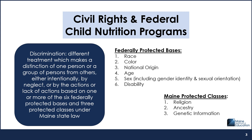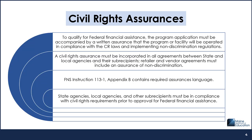The three protected classes in Maine include religion, ancestry, and genetic information. To be eligible to operate the CACFP, you must agree to operate the program in compliance with civil rights laws and to implement non-discrimination regulations. This assurance is required to eliminate discrimination against applicants, participants, and beneficiaries, and helps to prevent future discrimination while addressing effects of past discrimination.